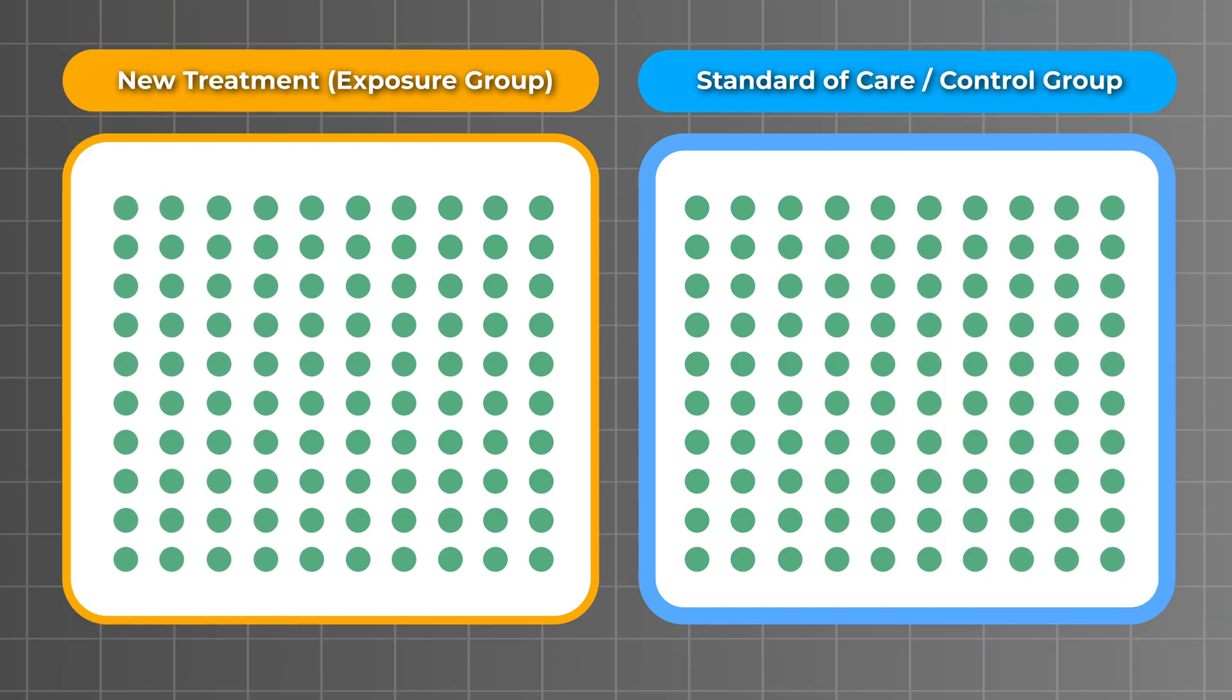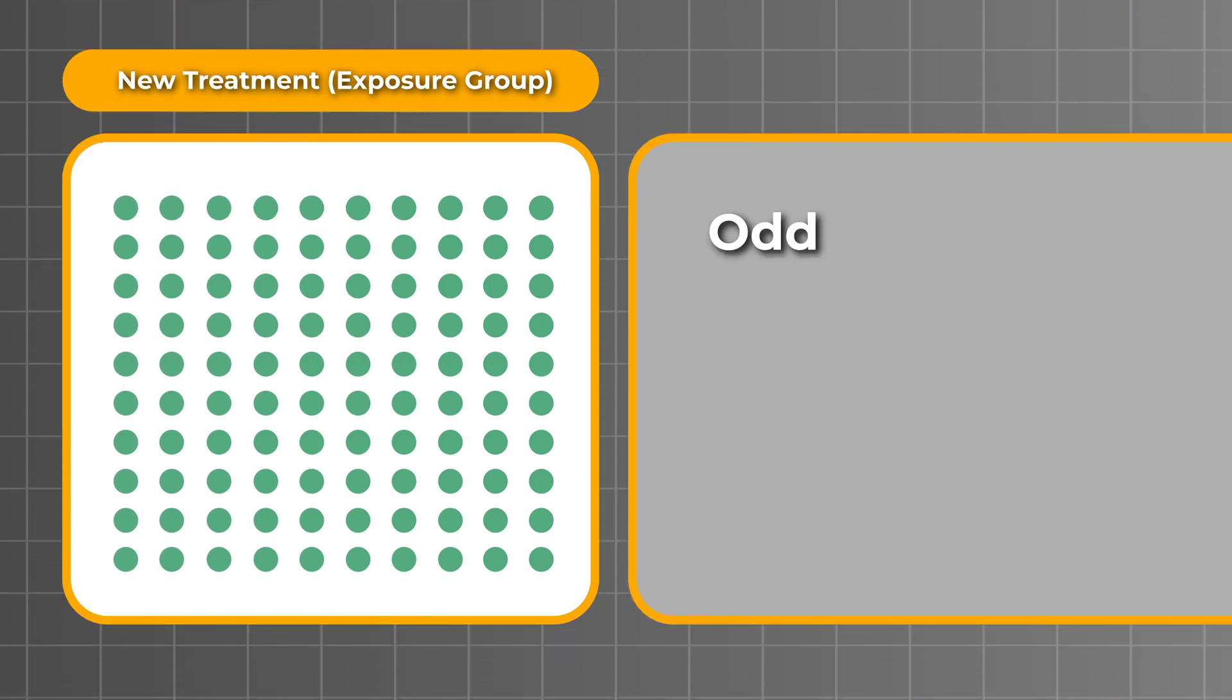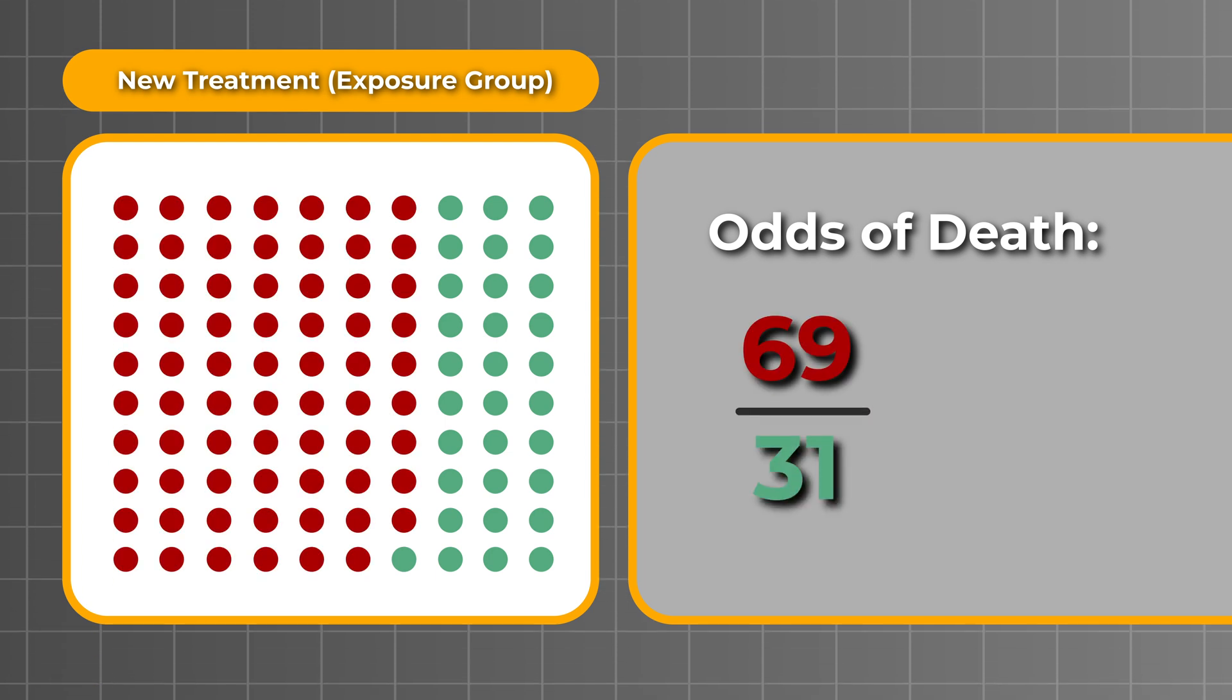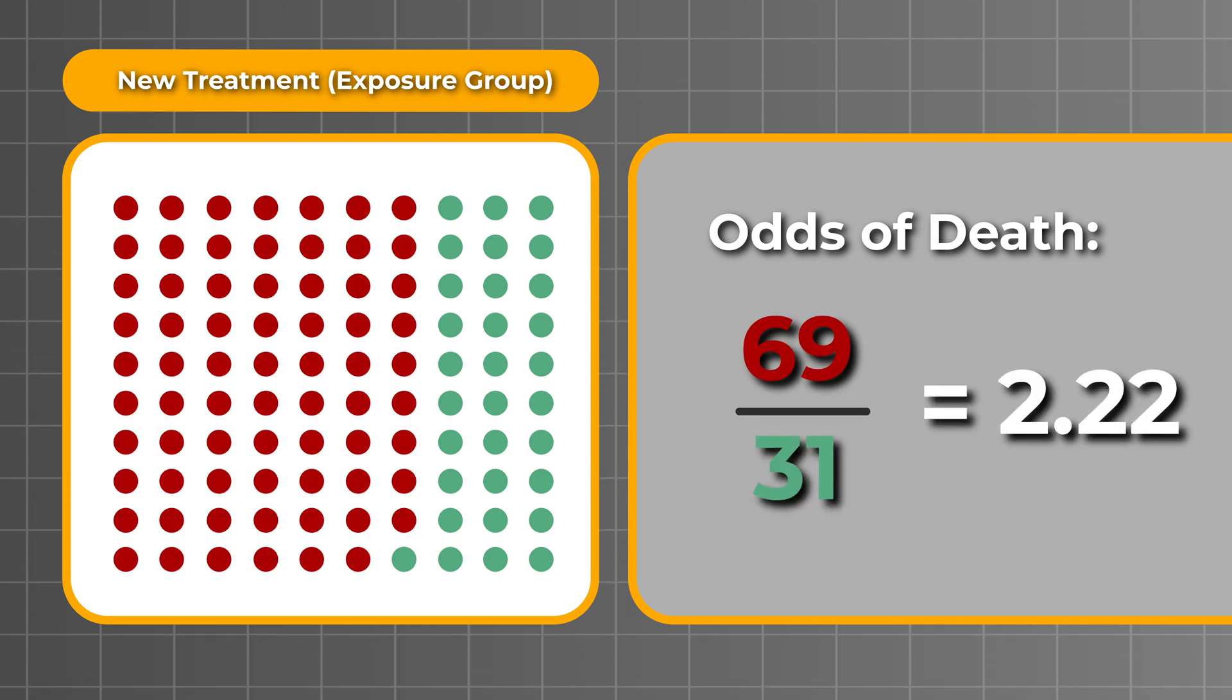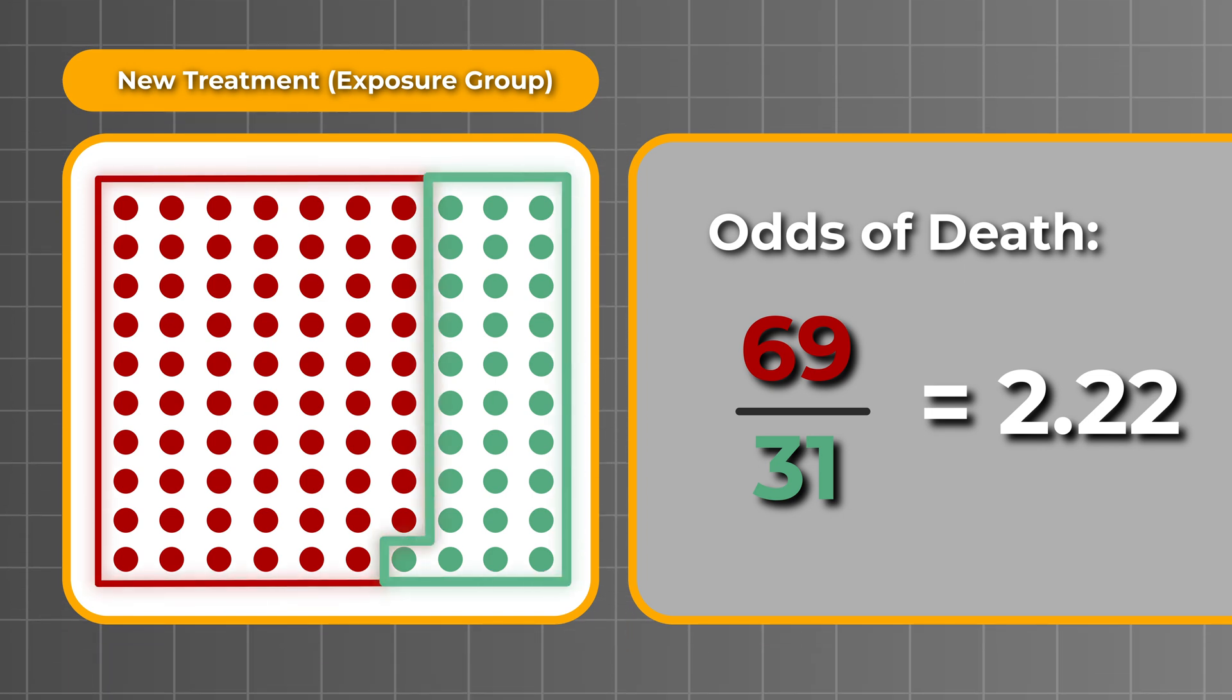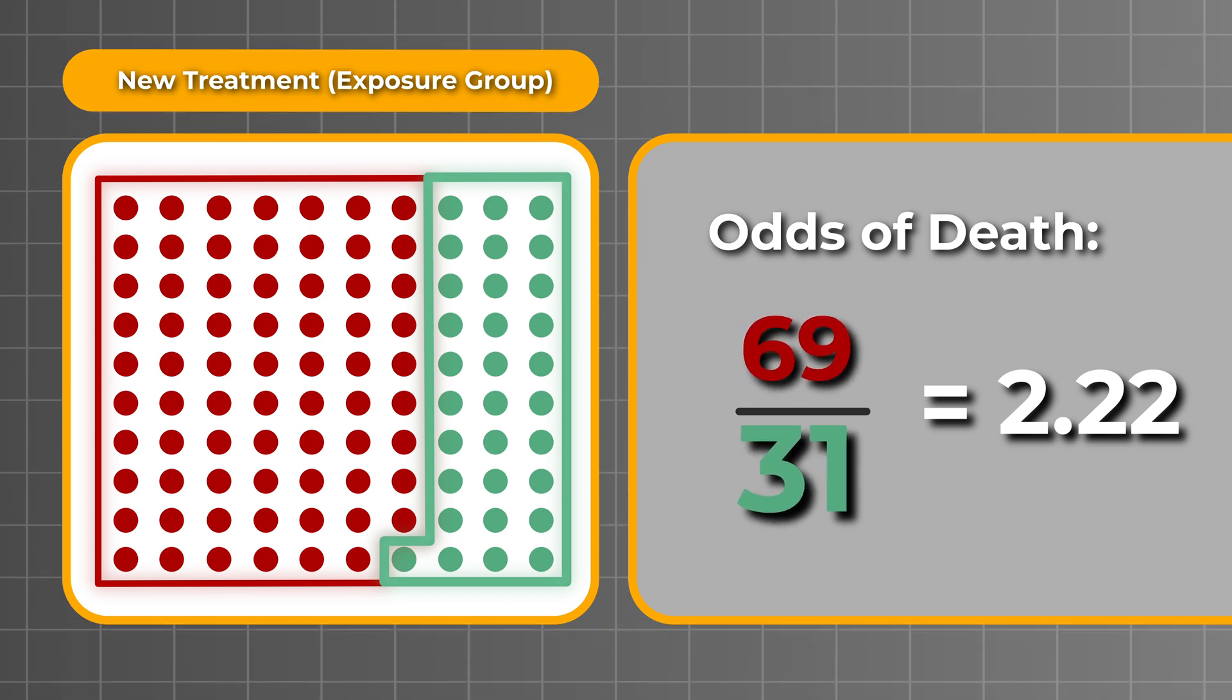Let's go back to our example from earlier. For the patients who received the new treatment, the odds of death are 69 over 31, which comes out to 2.22. 69 patients had the outcome and 31 patients did not. So, patients in the new treatment group are actually more likely to die than they are to survive.